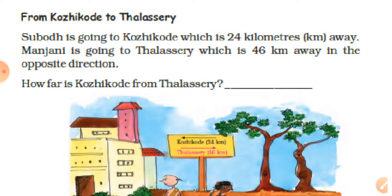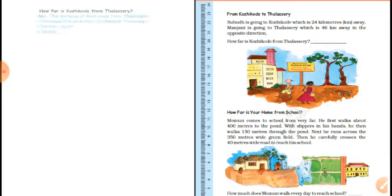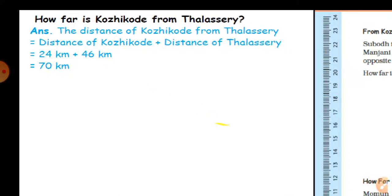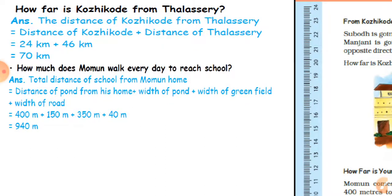Suboth is going to Kozhikode, which is 24 km away from Manjani, and is going to Thalassery, which is 46 km away in the opposite direction. How far is Kozhikode from Thalassery? Look at here. The distance between Kozhikode and Thalassery: distance from Kozhikode is 24 and distance from Thalassery is 46, total is 70 km.